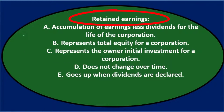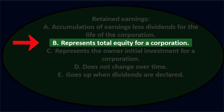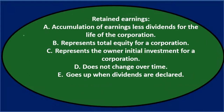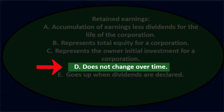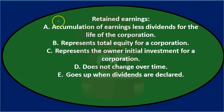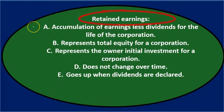Next question: Retained earnings — A. accumulation of earnings less dividends for the life of the corporation, B. represents total equity for a corporation, C. represents the owner's initial investment for a corporation, D. does not change over time, E. goes up when dividends are declared. Going through this again using the process of elimination: A — accumulation of earnings less dividends for the life of the corporation — sounds pretty close. Retained earnings is the earnings less what's been given out in dividends, so I'll keep that for now.